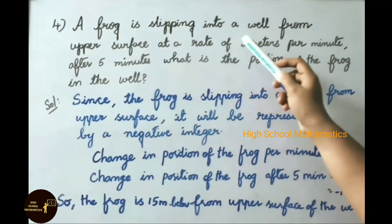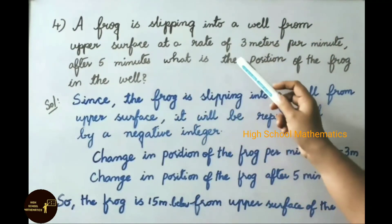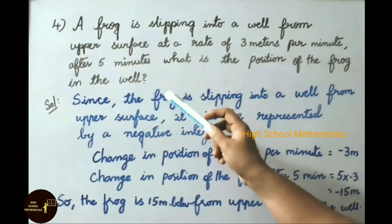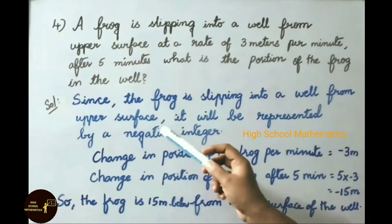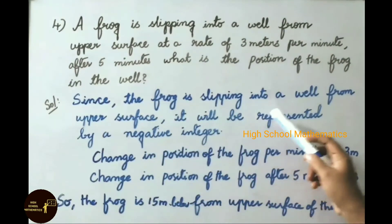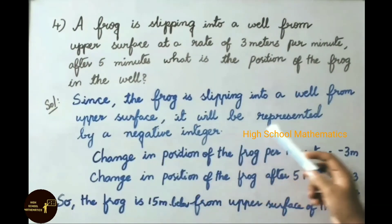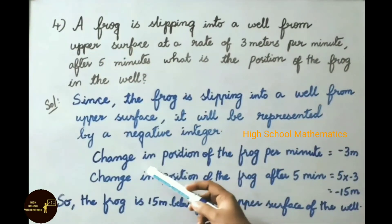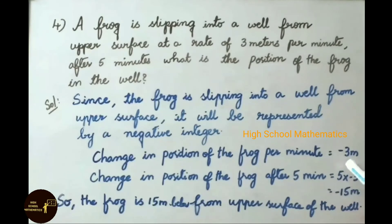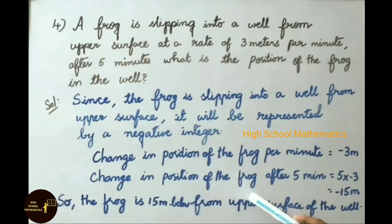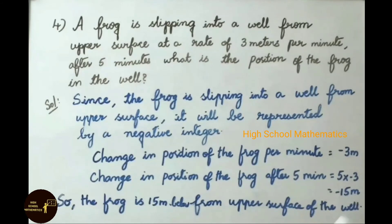Question number 4: a frog is slipping into a well from the upper surface at a rate of 3 meters per minute. After 5 minutes, what is the position of the frog in the well? Since the frog is slipping downward, it is represented by a negative integer. Change in position per minute is minus 3 meters. Change in position after 5 minutes equals 5 into minus 3, that equals minus 15 meters. So the frog is 15 meters below the upper surface of the well.